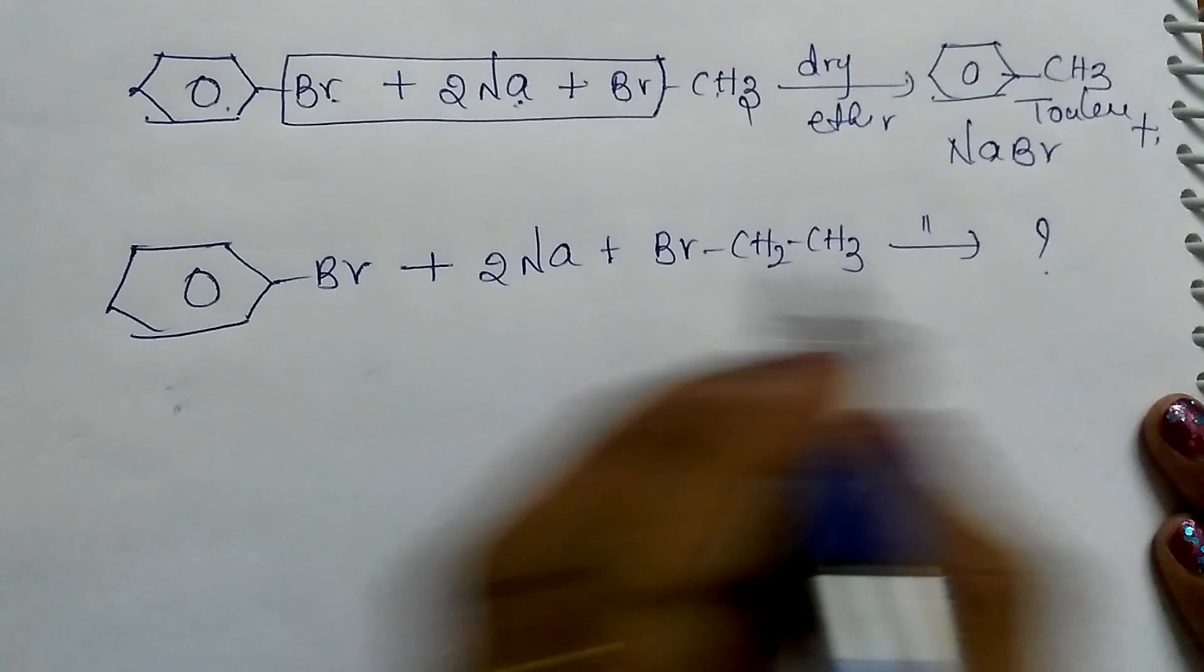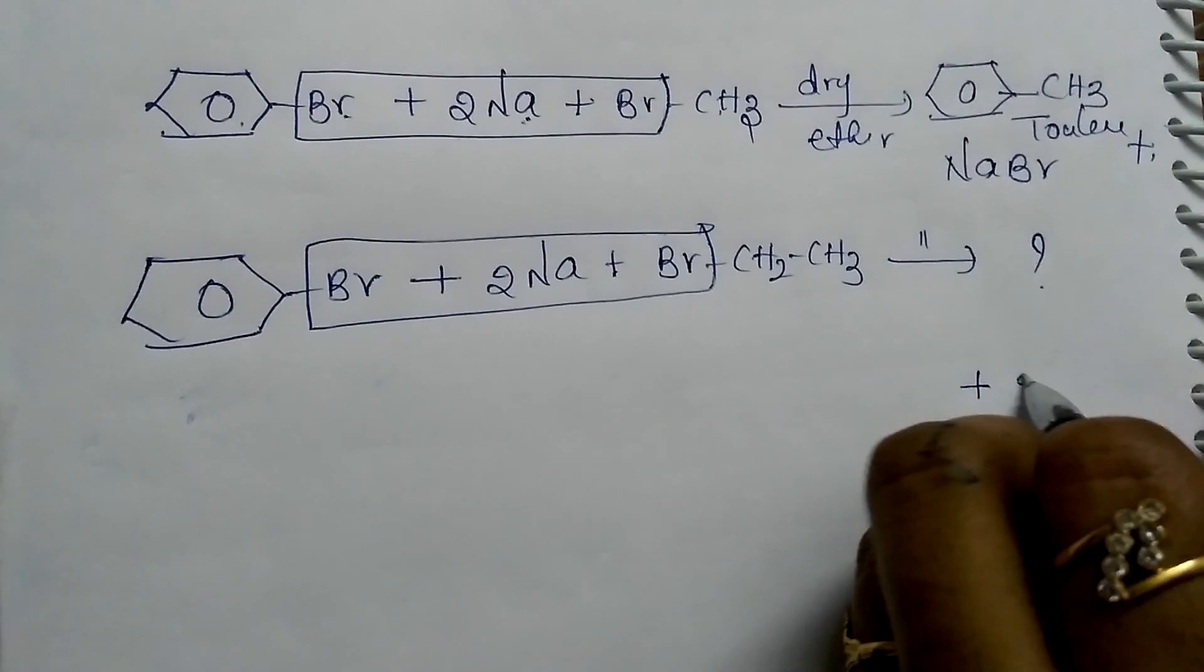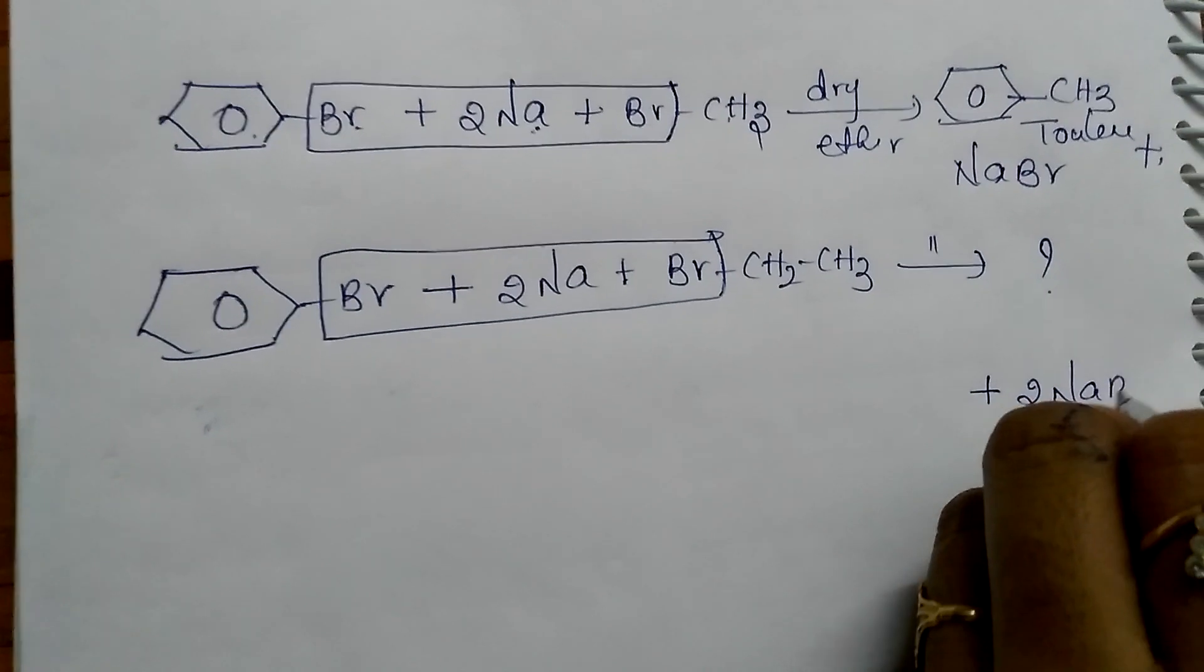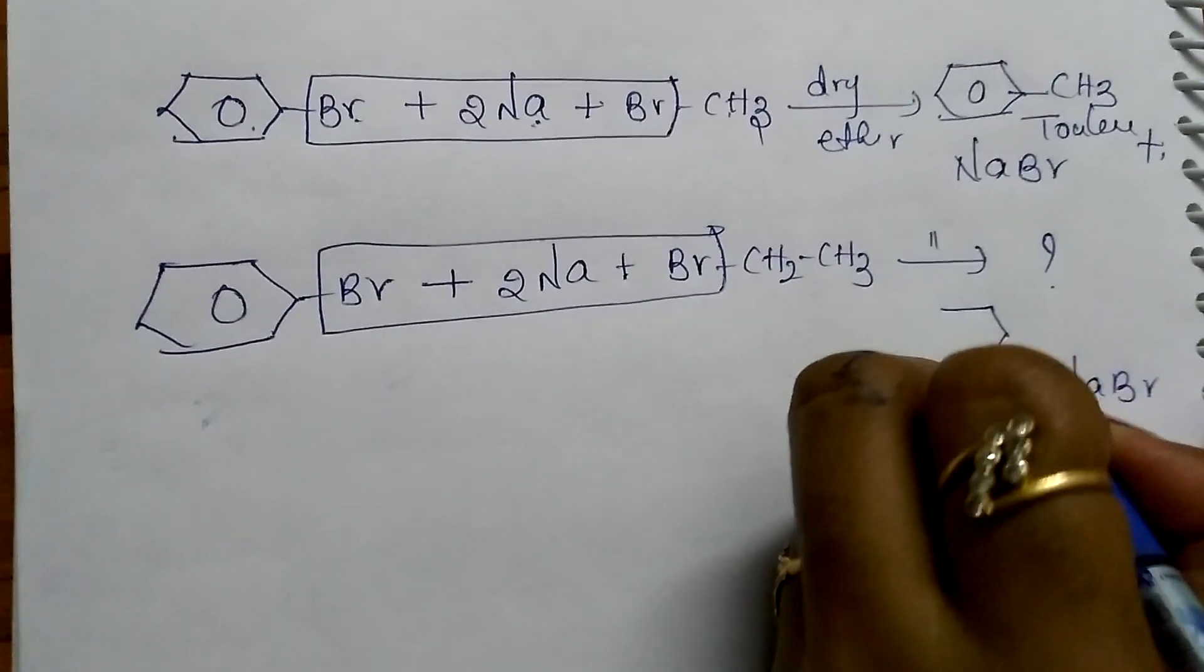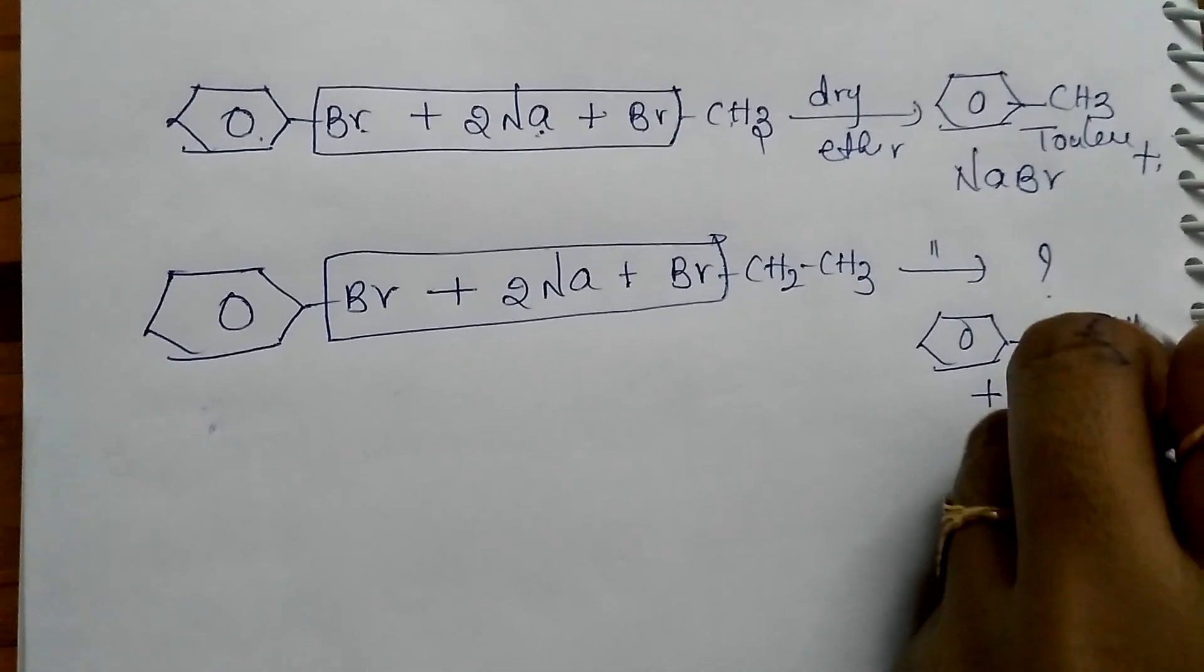NaBr goes as NaBr, so two molecules of NaBr are formed, and to this benzene the CH2-CH3 group is connected.